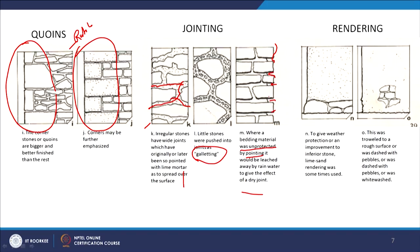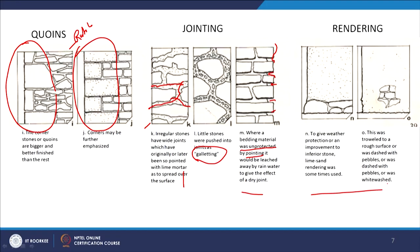In rendering, lime-sand renders were used — these were applied to a rough surface, and dashed pebbles or whitewash was applied. The lime-sand rendering has been applied, and sometimes a rough surface is created so that renders are applied over it.